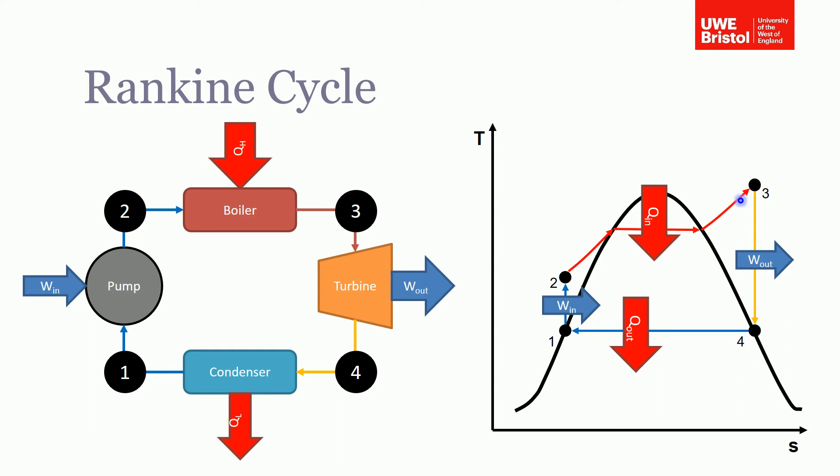So you can see that we've heated it up to point 3. Put that through the steam turbine and that reduces its temperature. But we're assuming that's a constant entropy, an isentropic expansion process.